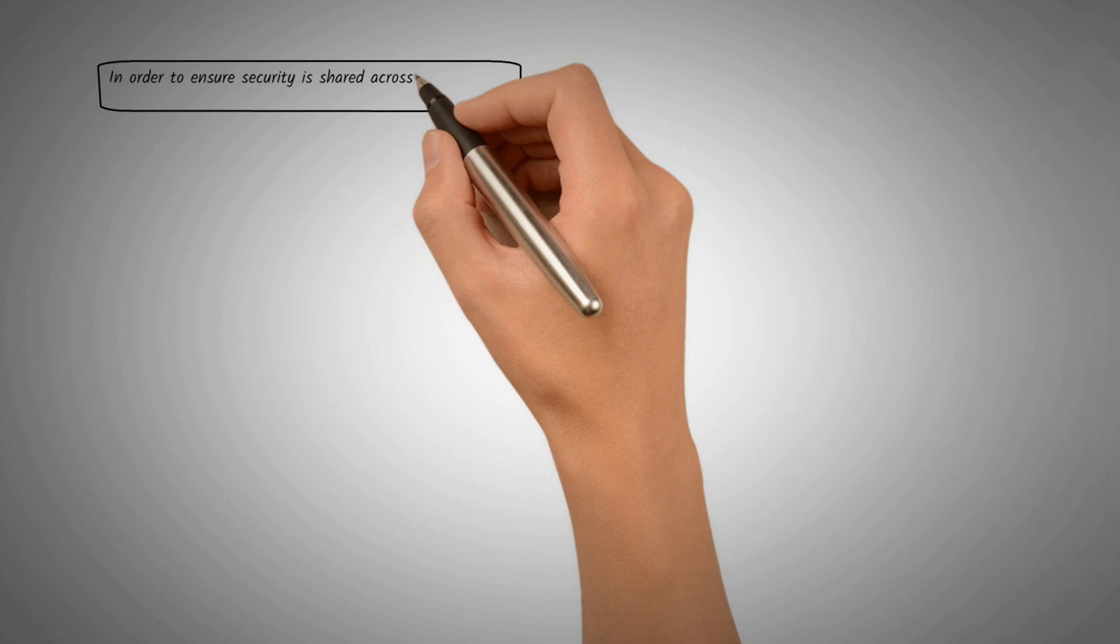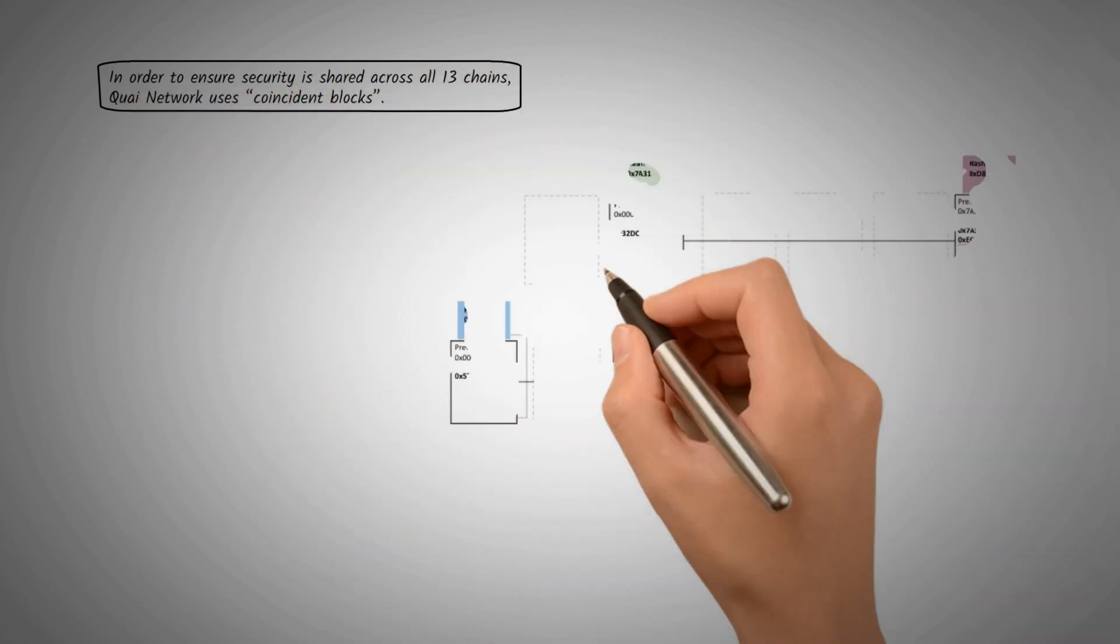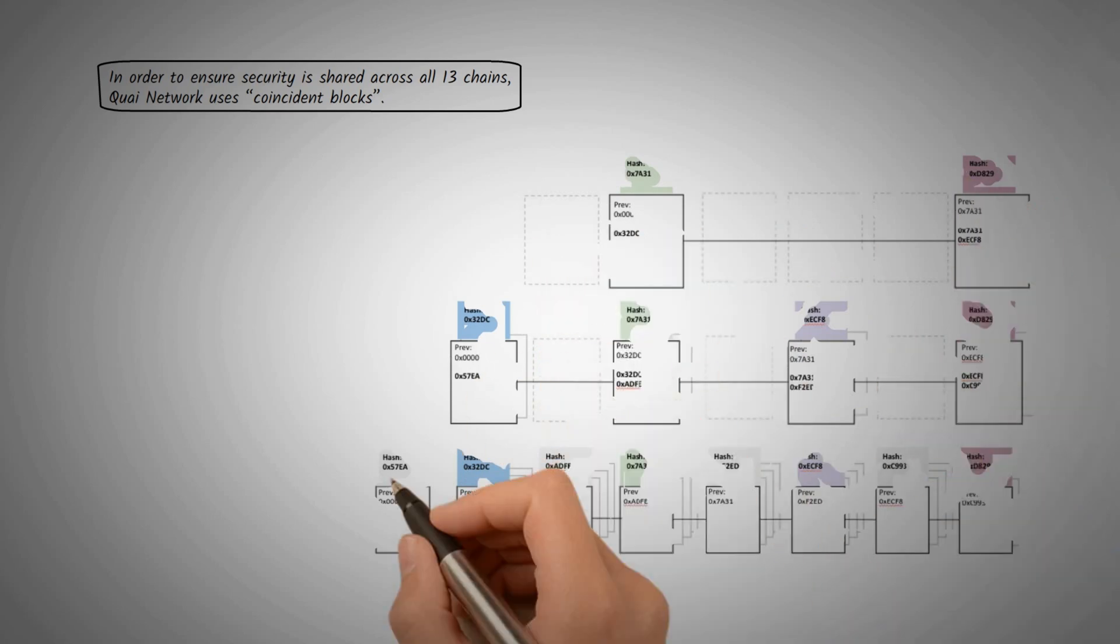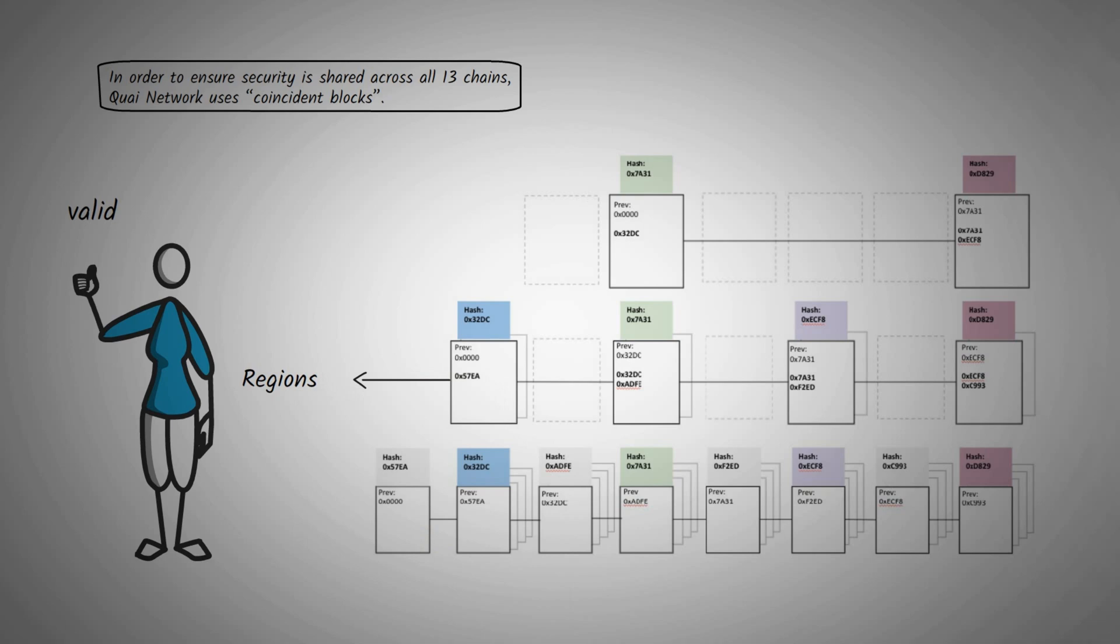In order to ensure security is shared across all 13 chains, Quai Network uses coincident blocks. A coincident block is simply a block that is valid in multiple blockchains across Quai Network. Every valid region block, for example, also contains a zone block, eventually tying all security back into the Prime Chain.